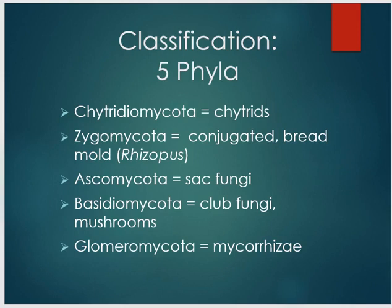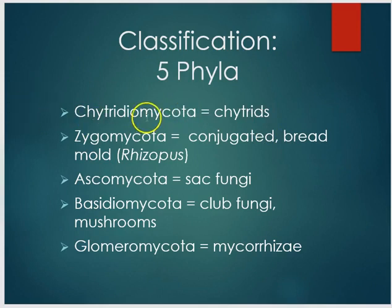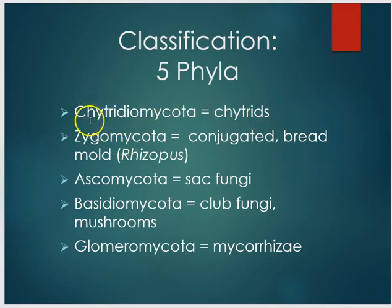Here are the five phyla in the kingdom fungi. We have the chytrids — the chytridium mycota, often referred to as chytridium mycetes, where mycota or mycetes refers to the fungus. We'll talk about chytridium in a bit because of their role as much of the cause of the demise of amphibian populations worldwide.